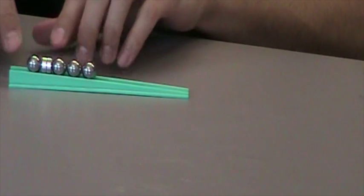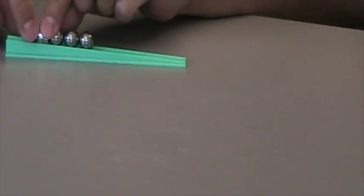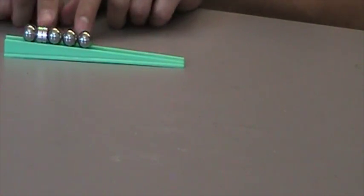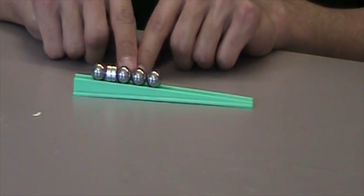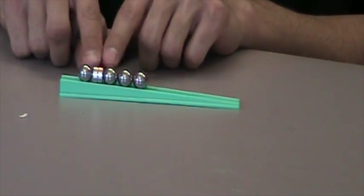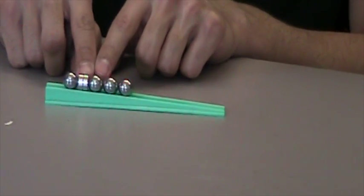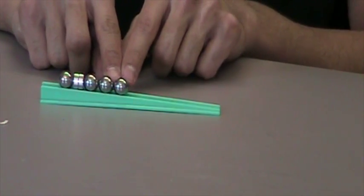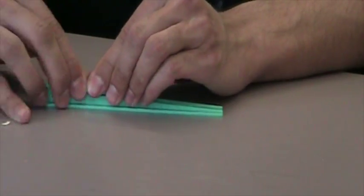This works because the attractive force of the magnet to this steel ball is very strong. However, the attractive force between these magnets and this steel ball is very weak. This is because the magnetic field created by magnets diminishes at a greater distance. So the attractive force here is very weak, but the attractive force here is very strong.